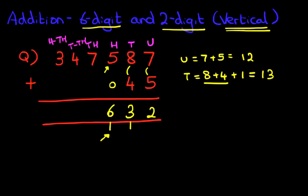Now the other digits, the 7 over here, 4 and the 3, they stay as they are because we're not adding anything to them. We can even put a comma over here. So therefore the answer is 347,632.